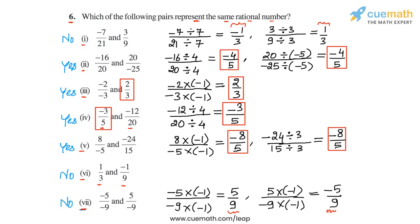To summarize, the pairs that represent the same rational number are pair 2, pair 3, pair 4, and pair 5. These are the four pairs that represent the same rational number, completing question 6.